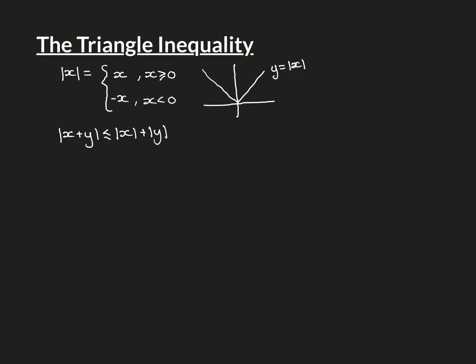The proof of this is very simple and gives you all of the understanding as to why this is true, so we'll crack on straight away with the proof. We're going to do a proof by cases — three separate cases. The first case we'll consider is when x and y are both non-negative, so both are greater than or equal to zero.